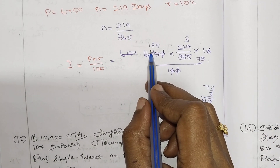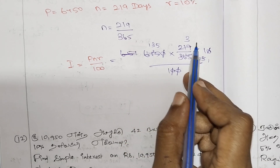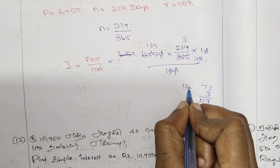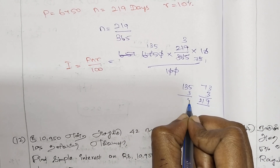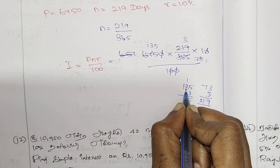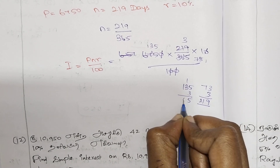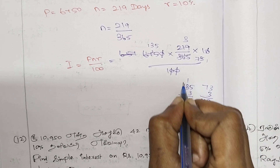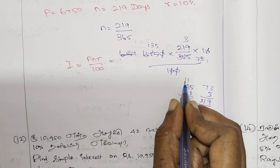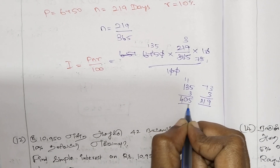3 times 5 is 15. 3 times 3 is 9, plus 1 is 10. 0, then 3 times 1 is 3, plus 1 is 4. So the result is 1040.